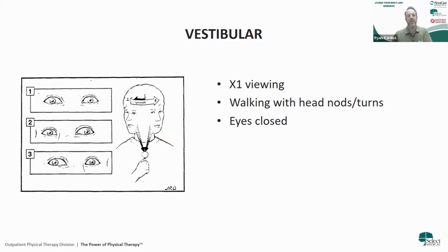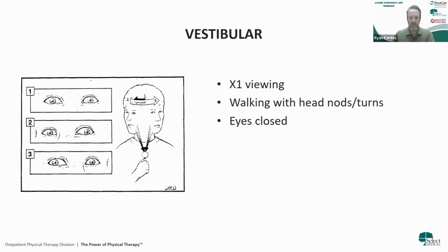Vestibular treatment includes times-one viewing: the person looks at a target while moving their head side to side, keeping the eyes on the target at all times — there are ways to progress that exercise. For someone complaining of imbalance with sudden movement, we focus on vestibular exercises. Walking with head nods and turns is also used — for example, can you maintain your walking pace while looking at store shelves, or do you need to stop walking to look?